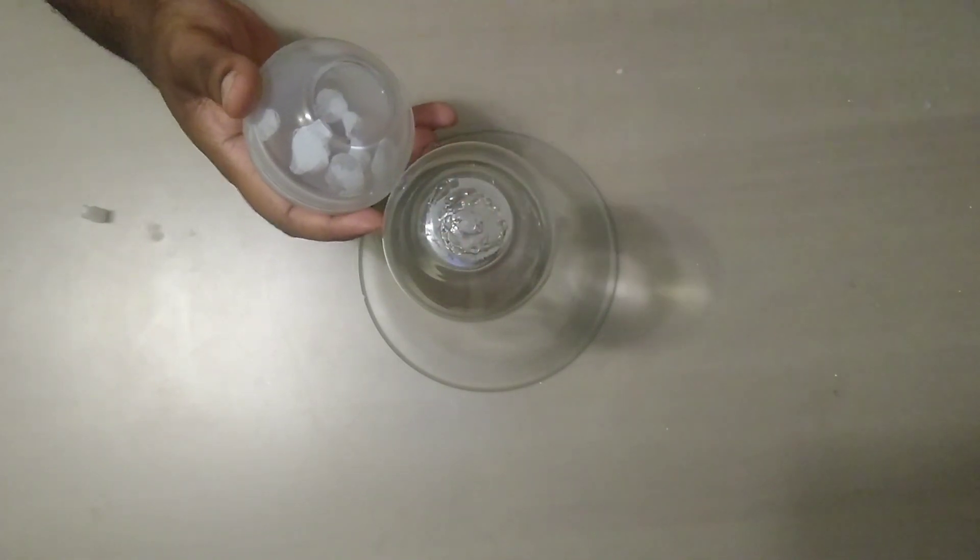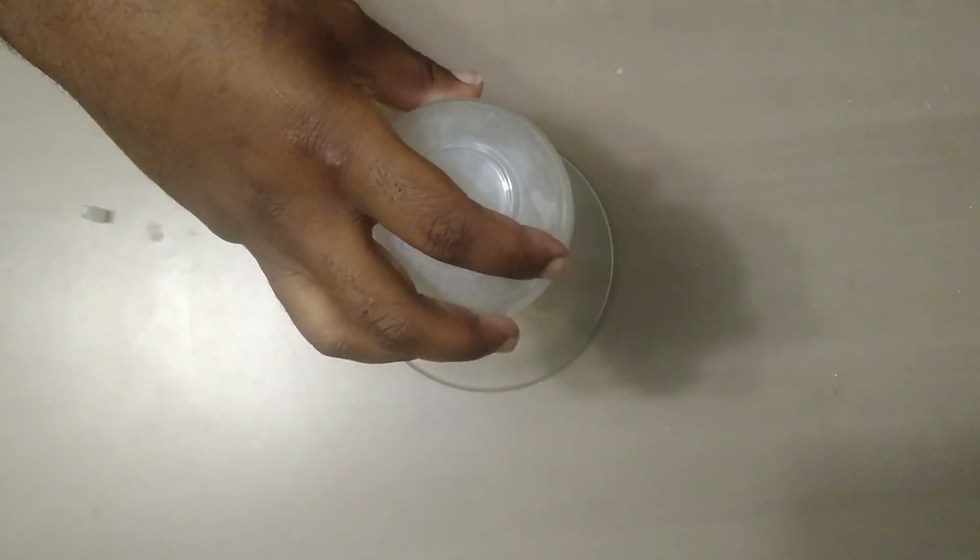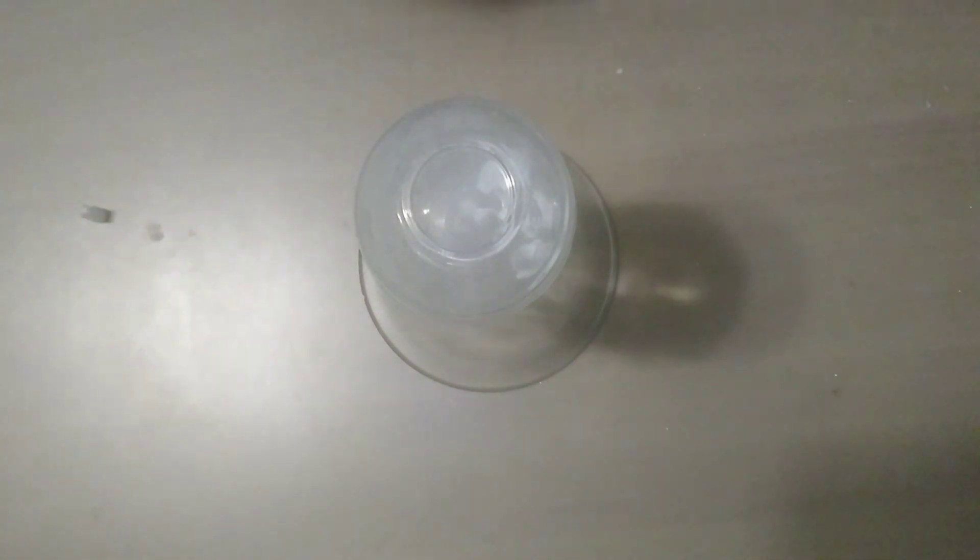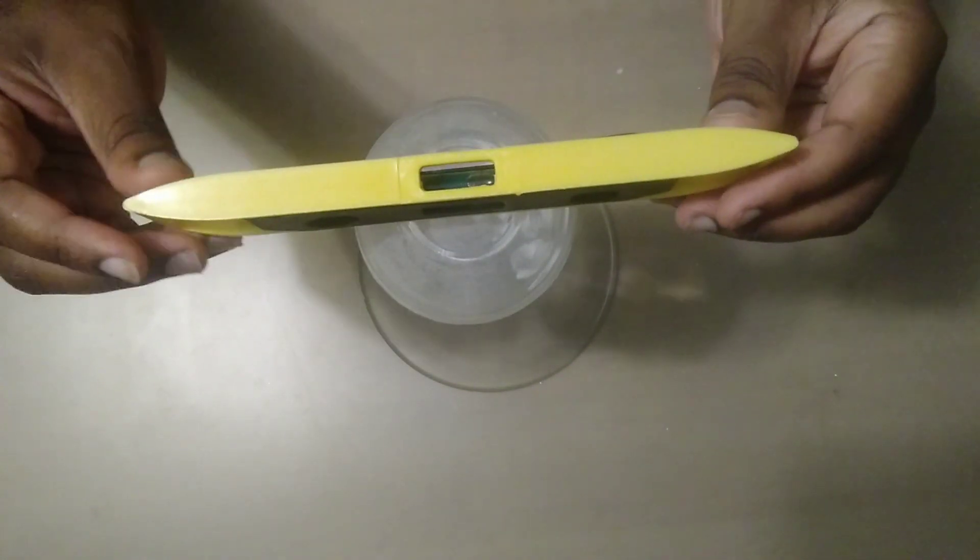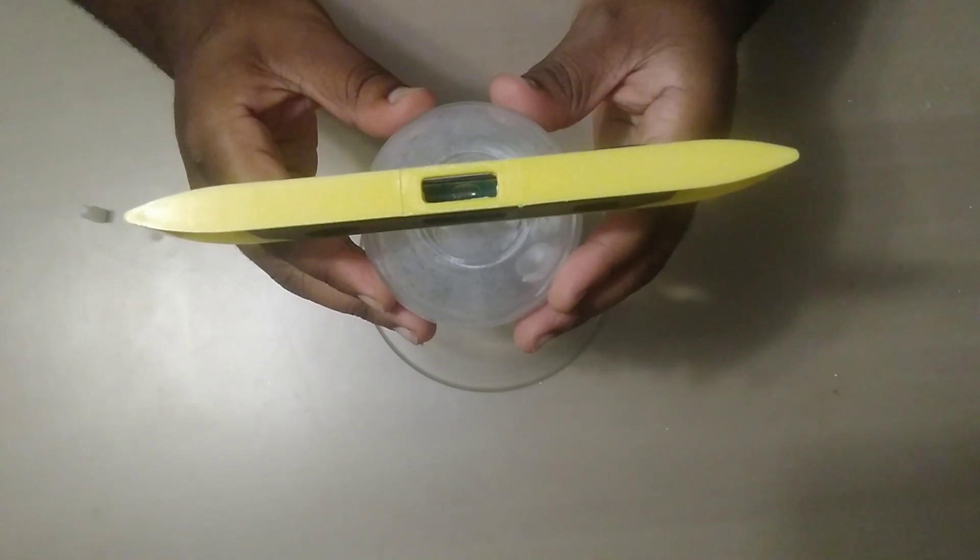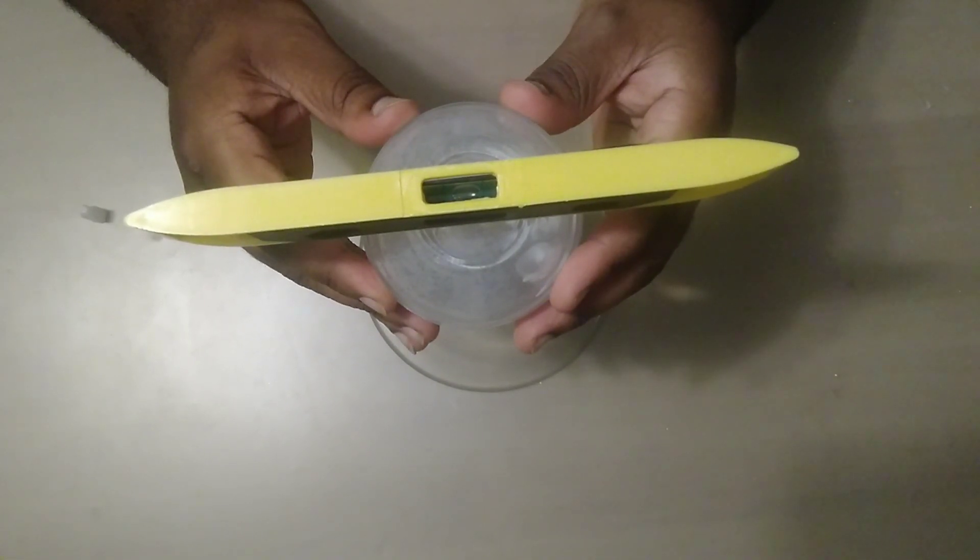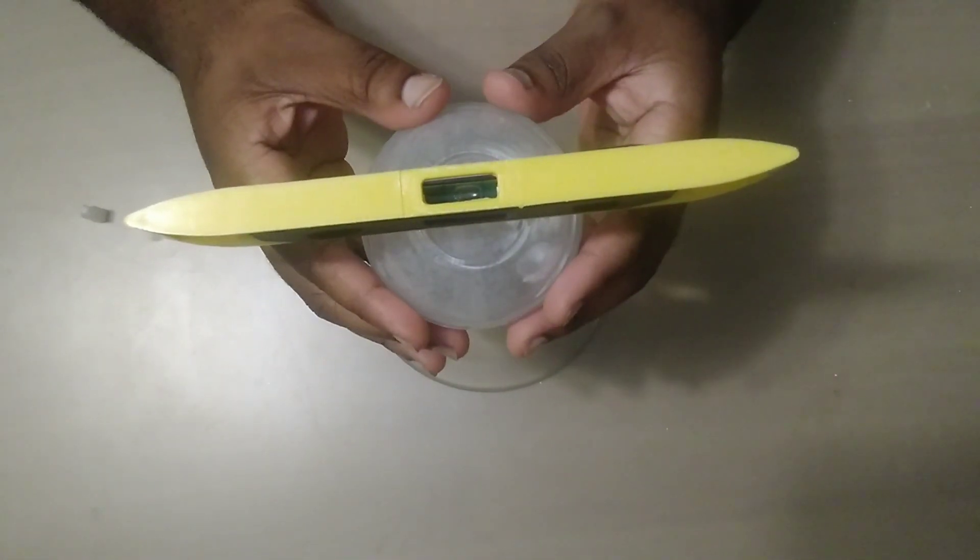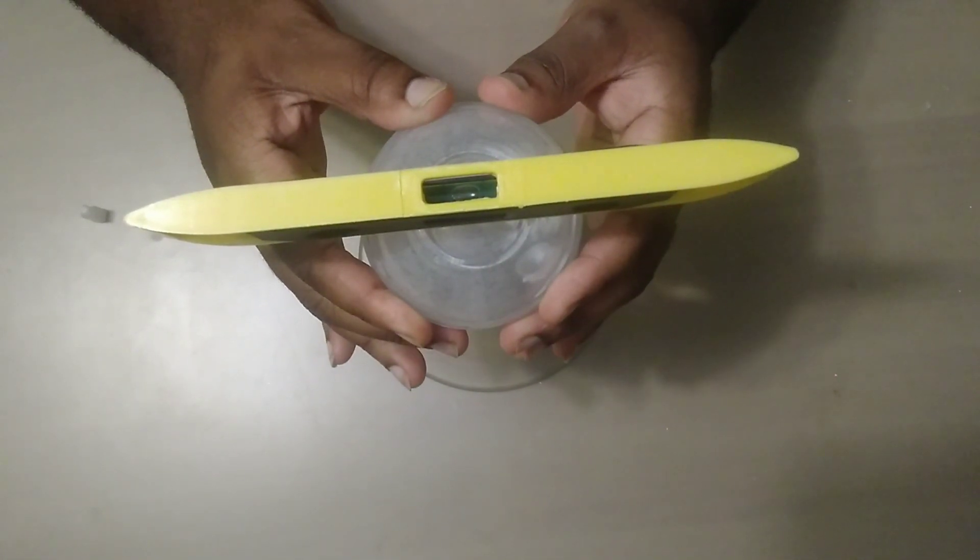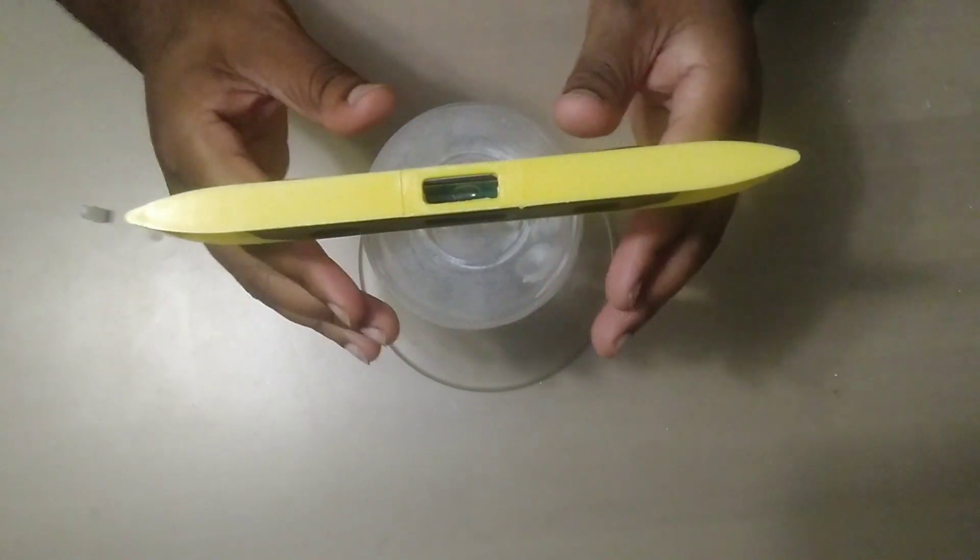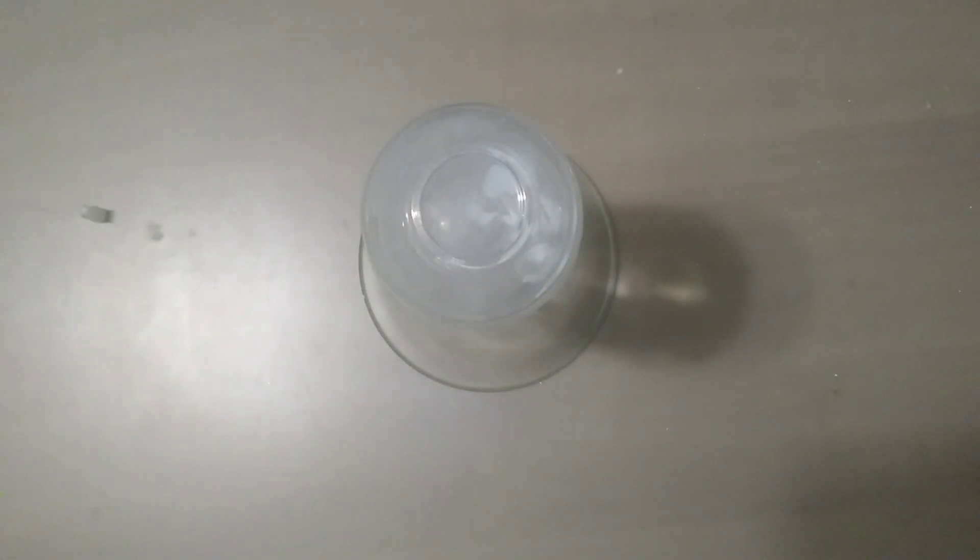Now I'm going to go ahead and piece my little ball, so to speak, my sphere, to the bottom of this broken vase with my Loctite super glue. And I am taking my time making sure that this is nice and centered because nothing is worse than having a beautiful centerpiece and setting it up and it's lopsided.